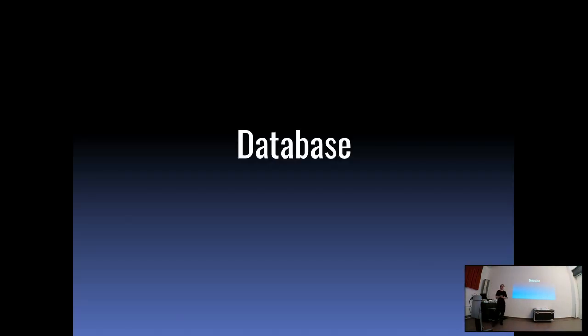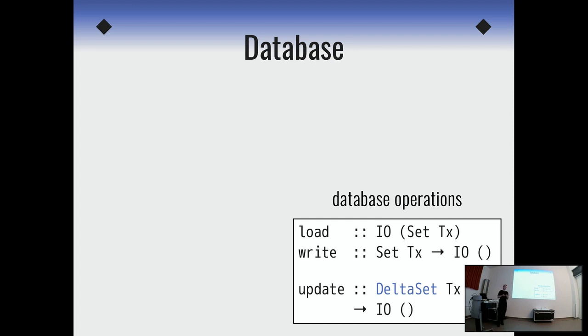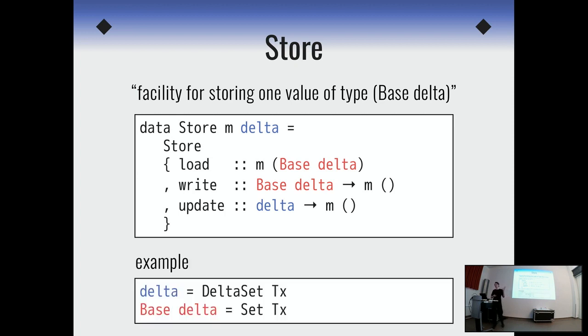All right. So this was about the delta encodings. Now for the other side, the database. So here's what we wanted to do. We had these two concerns, business logic, database operations, we talked about the need for deltas, and now how we deal with these database operations. So we have this set of three functions: load, write, and update. And now we package them up in a single data type. So let's define a store as a facility for storing one value of type base delta. So this store is essentially just a record packaging up all those three things. The load operation returns the value of this base. The write operation takes the value from the base and puts it into the store, and update takes the delta and applies it directly to the store.